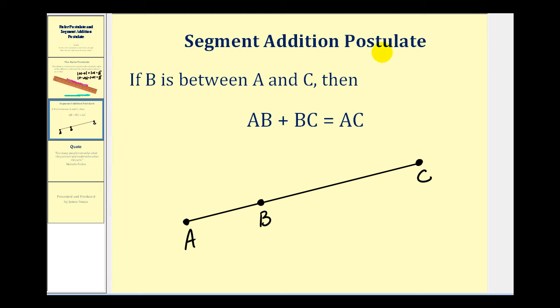The segment addition postulate tells us that if we have the segment AC and the point B is between point A and point C, then the length of AB plus the length of BC must equal the length of AC. So the distance from A to B added to the distance from B to C would give us the total length from point A to point C.